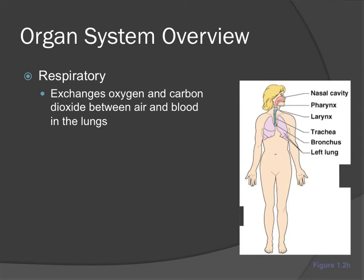When we breathe in, we take in oxygen that travels to all of the tissues in the body, supplying adequate amounts to all vital organs. Oxygen is transported through the body via red blood cells. When those red blood cells distribute oxygen to vital organs, they pick up carbon dioxide — a waste product — transport it back to the lungs, and we exhale to get rid of the carbon dioxide.